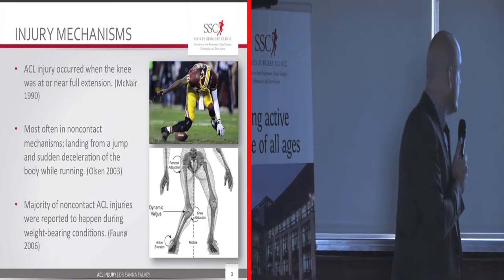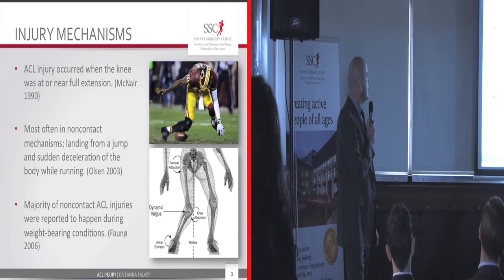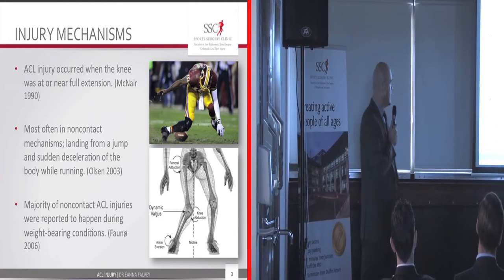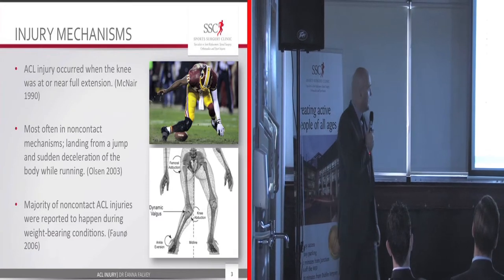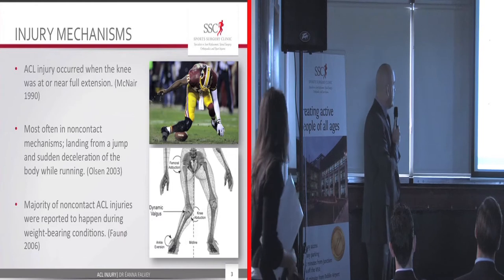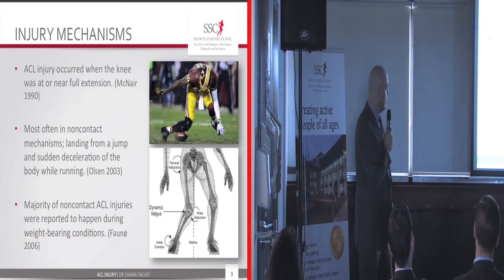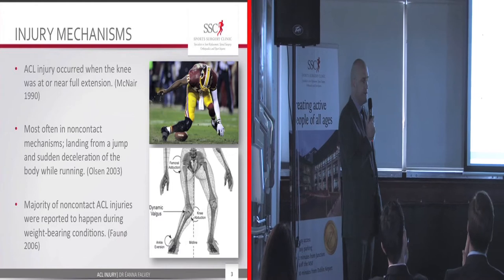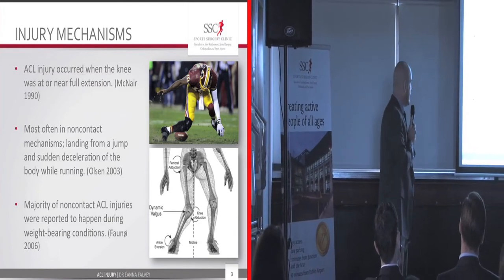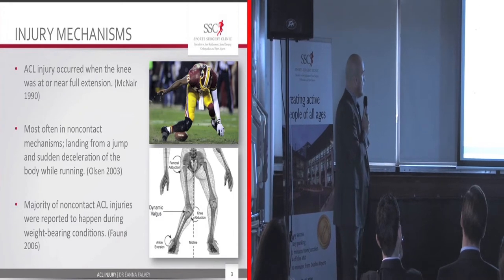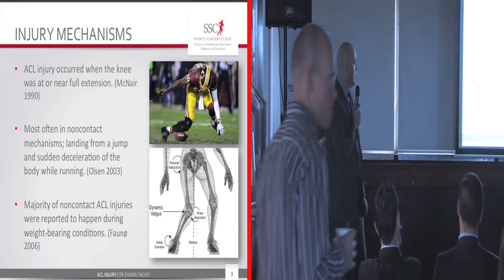A study by McNair — some of this is reasonably old data, but we've been looking at these for a long time. The injury occurred when the knee was at or near full extension, most often non-contact: landing from a jump, sudden deceleration, or while running. Rob Griffin III, the Washington Redskins quarterback, had a partial injury and then re-injured the area fully over the course of the season. The forces involve femoral abduction, knee abduction, and dynamic valgus — the movement we're worried about — and ankle involvement can also be seen. The majority of non-contact ACL injuries are reported in a weight-bearing condition.